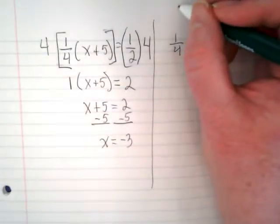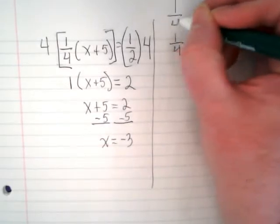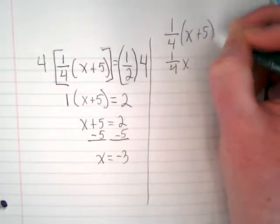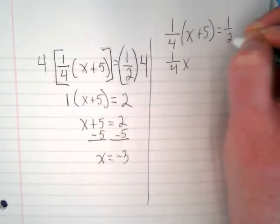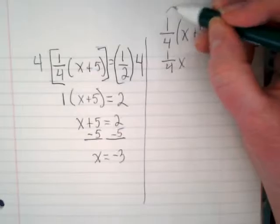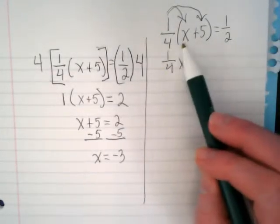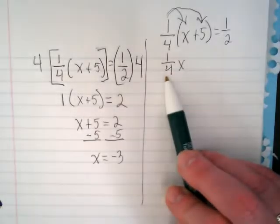Oops, I'm starting to write it without giving you the original problem again. So let me start up here. 1 fourth times x plus 5 equals 1 half. So if I'm going to distribute this 1 fourth, I'm going to multiply it times both of these. 1 fourth times x is going to give me 1 fourth x.